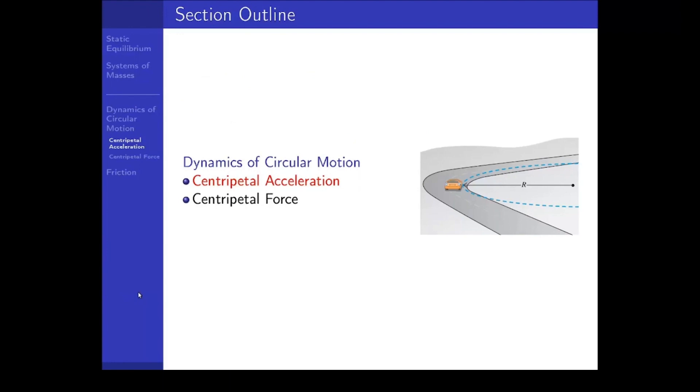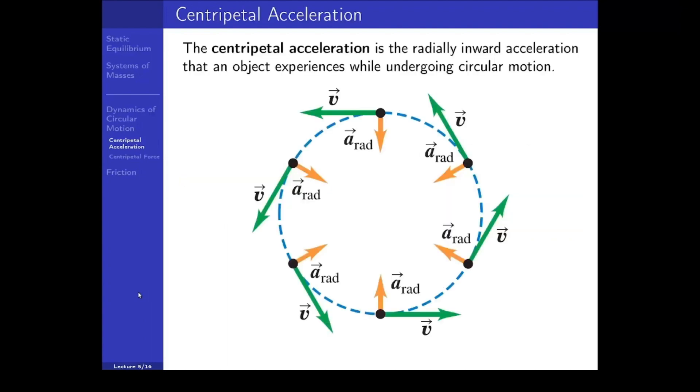So centripetal acceleration, that is a term we've seen before. The centripetal acceleration is the radially inward acceleration that an object experiences while undergoing circular motion. Here we can see a figure illustrating uniform circular motion where an object is going in a circle at a constant speed. Since the speed is not changing there is no tangential acceleration. There is only an inward acceleration describing the fact that there is a turning occurring.